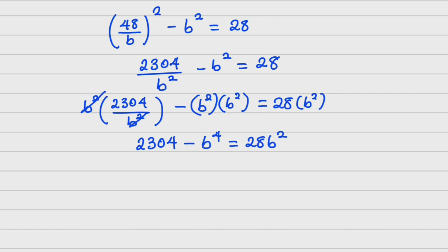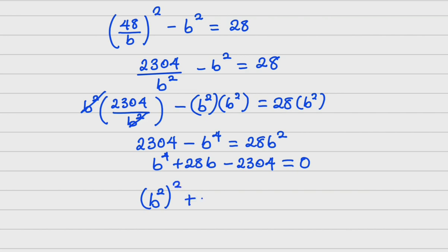Rearranging further, I get b⁴ + 28b² − 2304 = 0. Now this looks like a quadratic equation, only that b is raised to the power of four. Notice that b⁴ can be written as (b²)². So the equation becomes (b²)² + 28(b²) − 2304 = 0.